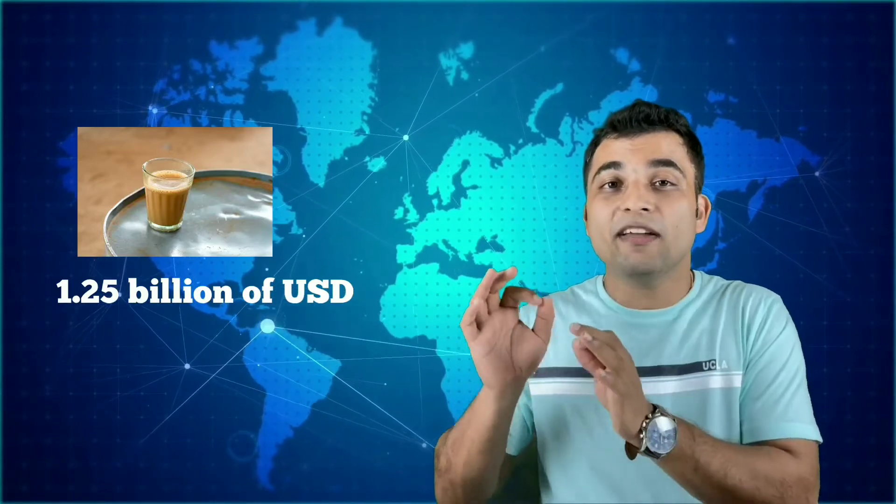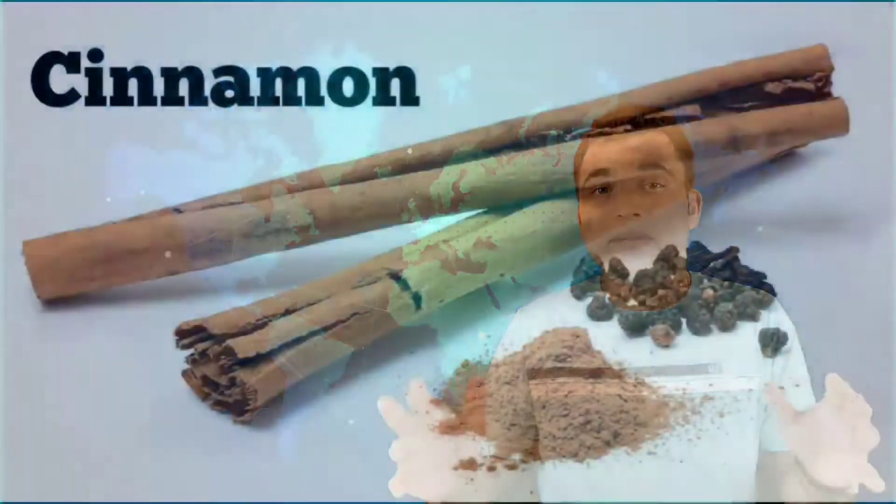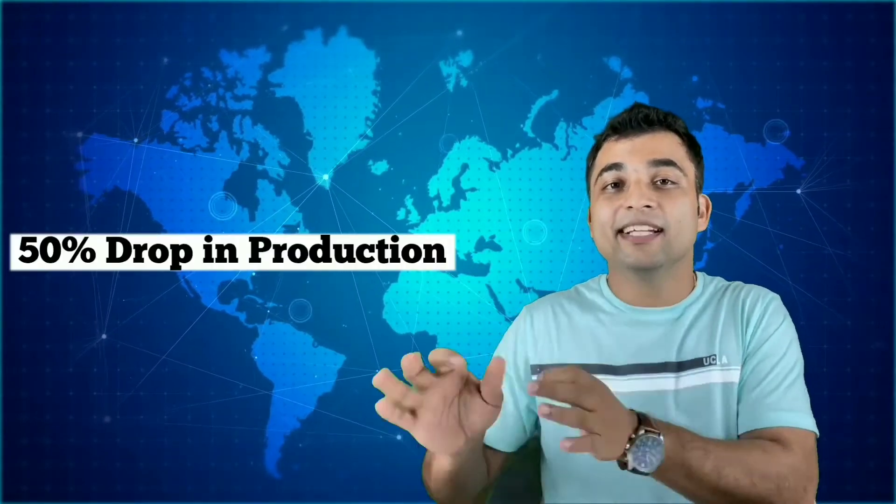And as we all know, Sri Lanka is famous for its tea which is about a 1.25 billion US dollar industry producing around 300 million kilograms of tea every year, becoming the global leader. Sri Lanka is also the global supplier of 85% of the world's cinnamon. The other spices like pepper and cardamom also are going to be affected. And because of which this billion dollar industry is going to face a 50% drop in its production.